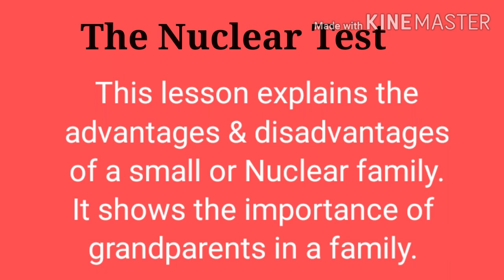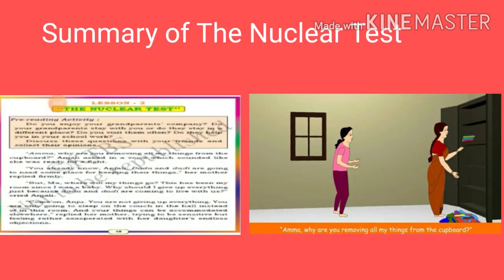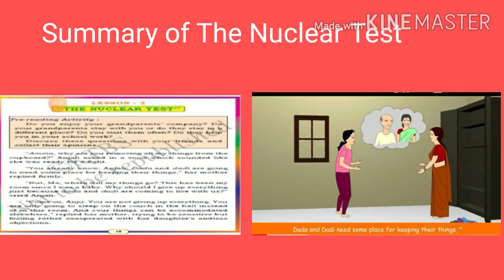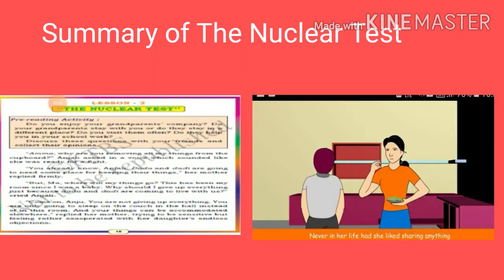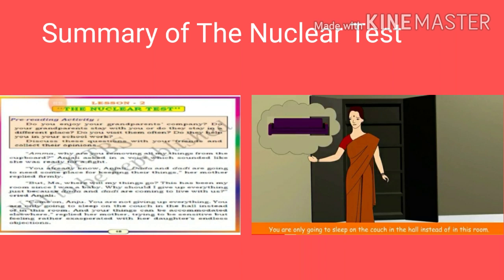This story shows the advantages and disadvantages of a nuclear family. Nuclear means a small family — the parents and their children. Here there is a small girl named Anjali, and her mother is removing all her clothes and everything from the cupboard and vacating her room because her grandparents — Dada and Dadi — are coming to stay. Anjali, having always been raised alone, doesn't feel happy that she has to vacate her own room.